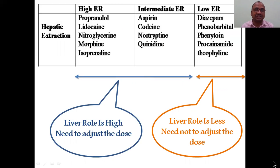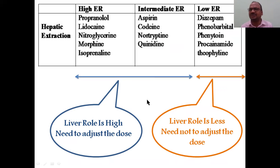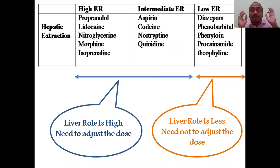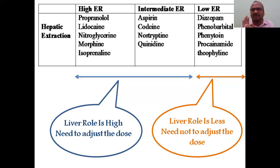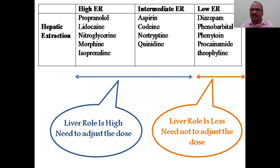There are three categories of hepatic extraction ratio. High hepatic extraction ratio drugs include propranolol, lidocaine, nitroglycerin, morphine, and isosorbide — these are highly metabolized in the liver. Moderate extraction ratio drugs include aspirin, codeine, nortriptyline, and quinidine — moderately metabolized. Low ER drugs such as digoxin, phenobarbital, and phenytoin are very less metabolized in the liver.